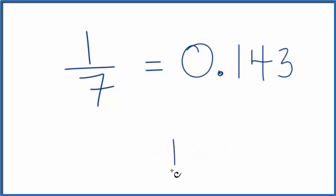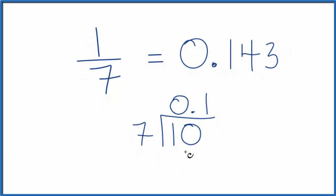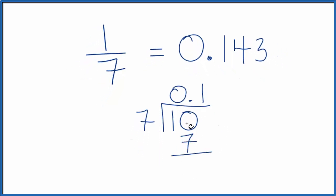So we have 1, and we want to know how many times 7 will go into 1. 7 doesn't go into just 1, so let's put 0 point here and put a 0 here. 7 goes into 10 one time. 1 times 7, that's 7. We subtract 10 minus 7, that gives us 3.